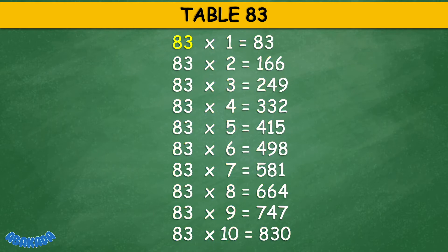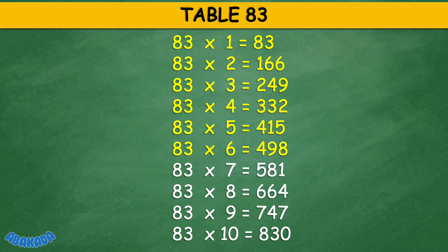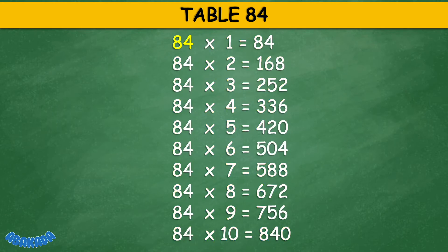Table 83: 83 times 1 equals 83, 83 times 2 equals 166, 83 times 3 equals 249, 83 times 4 equals 332, 83 times 5 equals 415, 83 times 6 equals 498, 83 times 7 equals 581, 83 times 8 equals 664, 83 times 9 equals 747, 83 times 10 equals 830.